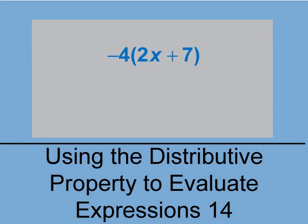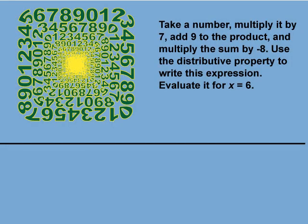Let's start with an example. Take a number, multiply it by 7, add 9 to the product, and multiply the sum by negative 8. Use the distributive property to write this expression and evaluate it for x equals 6. This is an example of converting words into an algebraic expression.